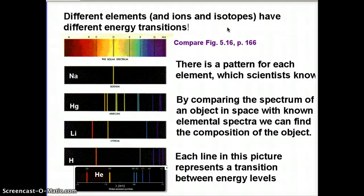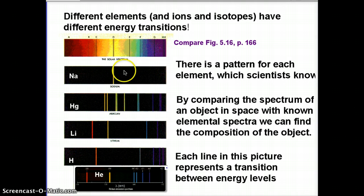The different elements all have different transitions that correspond to different energies, and therefore correspond to different wavelengths or different colors. There's a completely different pattern for each element. What you see here are emission line spectra for several different elements: sodium, mercury, lithium, hydrogen, helium.